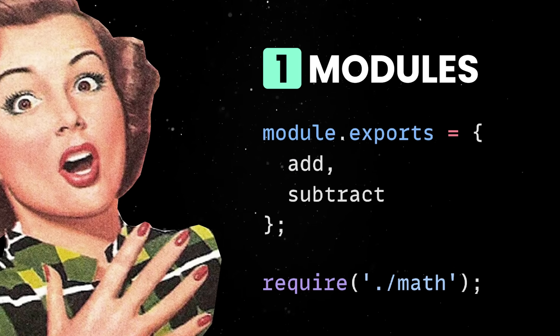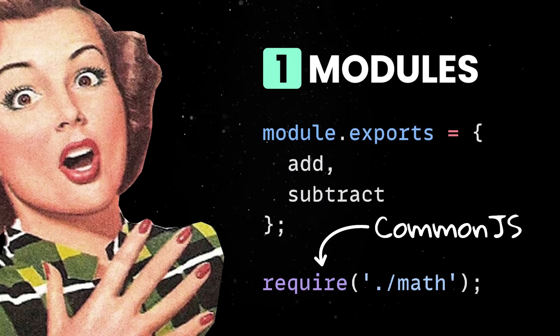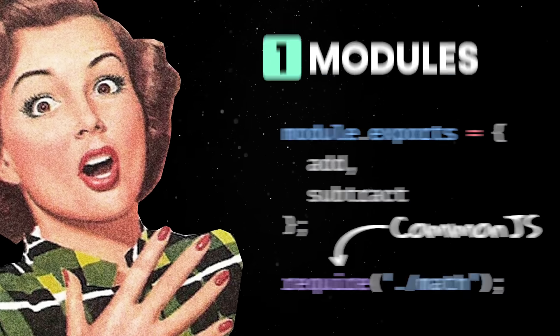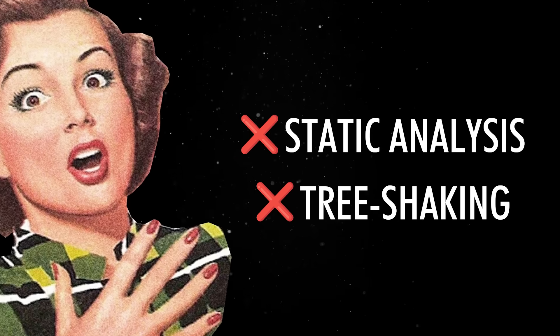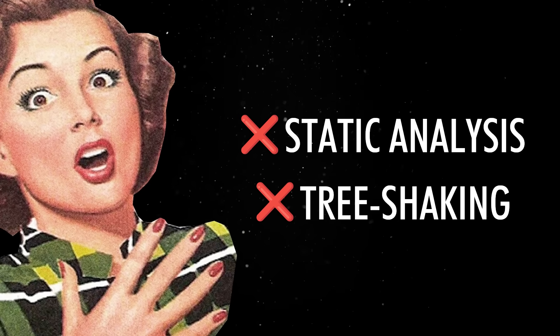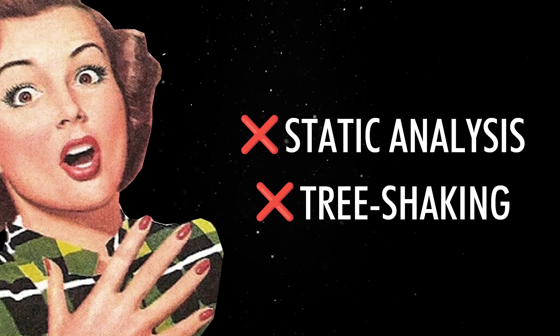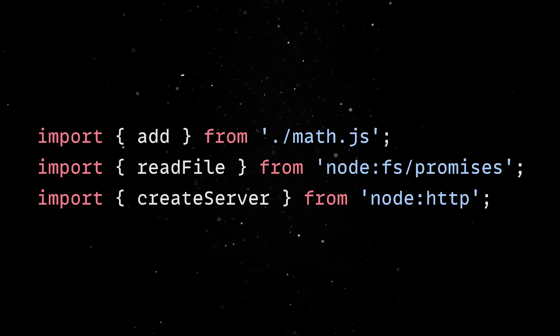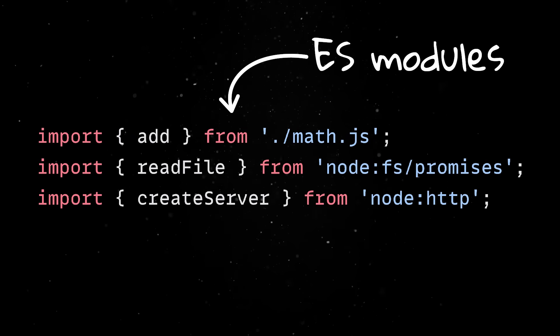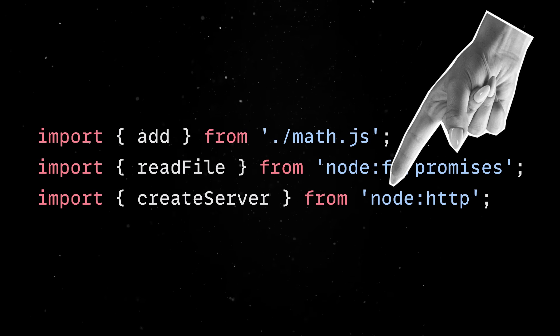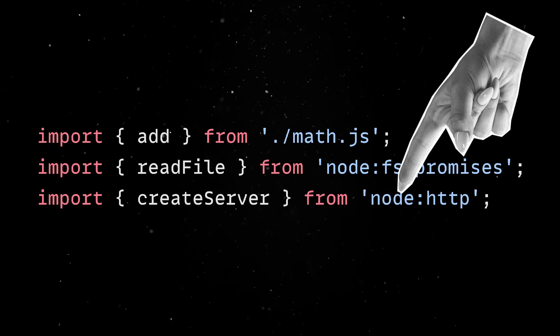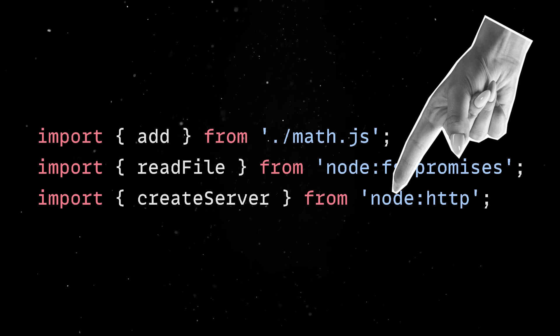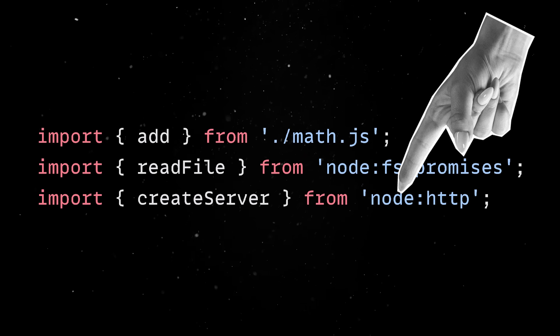The biggest wake-up call for anyone coming from older Node projects is the module system. CommonJS modules have been with us since the early days, but they have had limitations — no static analysis or tree-shaking was possible, and the system doesn't align with current browser standards. Modern Node defaults to ES modules, with one very important addition: the Node prefix for built-in modules makes it clear where your imports are coming from, avoiding subtle bugs where a third-party package shadows a core module.